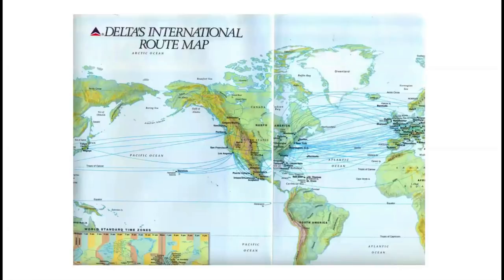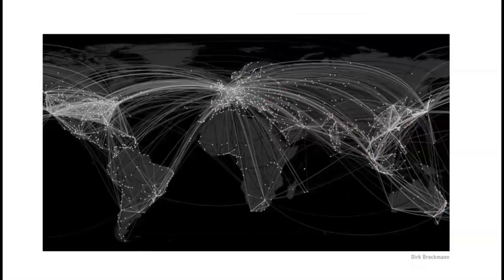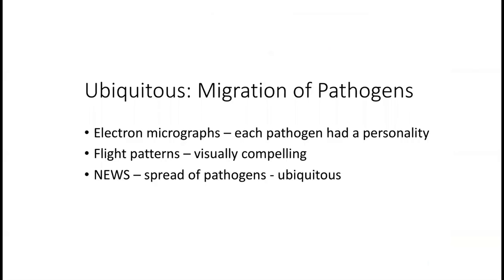The third thing that really inspired me was, whenever I was on an airplane, I'd flip to the back of the airline magazine and see all those wonderful flight route maps. I found them fascinating from an aesthetic point of view and those images really stuck in my mind. As I was inspired by the electron micrographs, I was also struck by the fact that we as humans can traverse the globe without any trouble — and what does that mean for the pathogen? The same thing. Migration of pathogens has really changed, and that is why it's in the news so frequently.